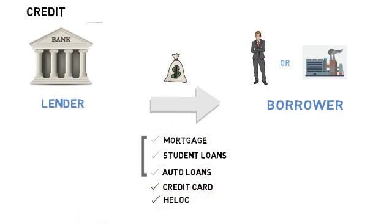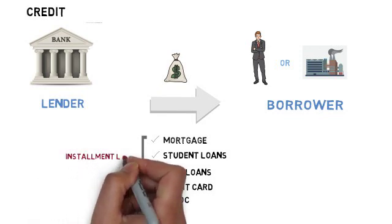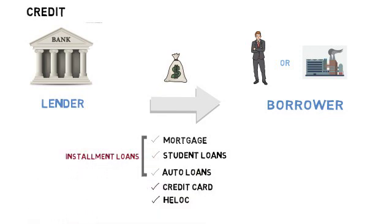The first three are installment loans where the loan is given for a fixed period and the loan is repaid in the form of scheduled periodic payments, what we call EMIs. The credit card and HELOCs are revolving loans where the borrower has the flexibility to decide when to borrow, how much to borrow, and the payments are open-ended. Whatever is paid is made available for borrowing again.